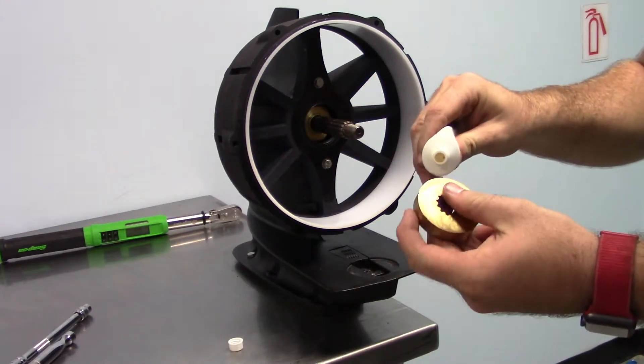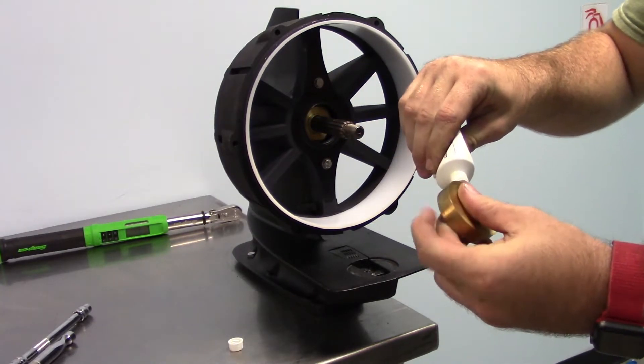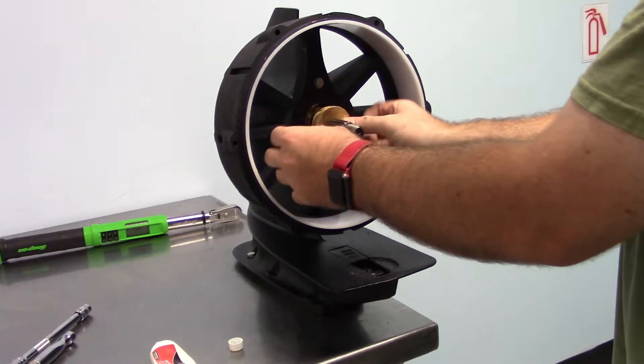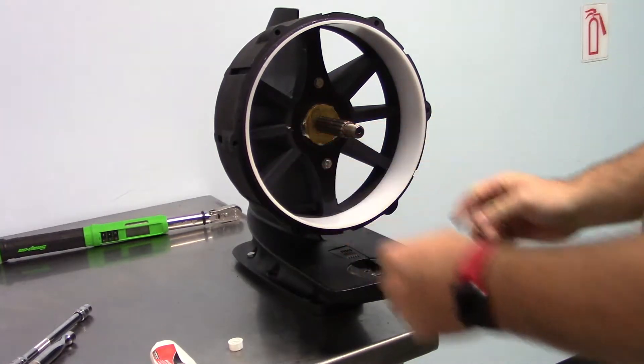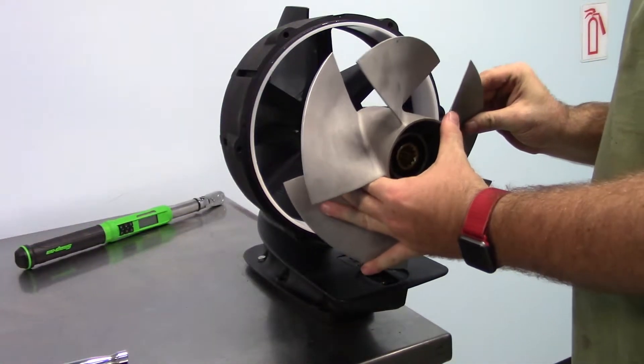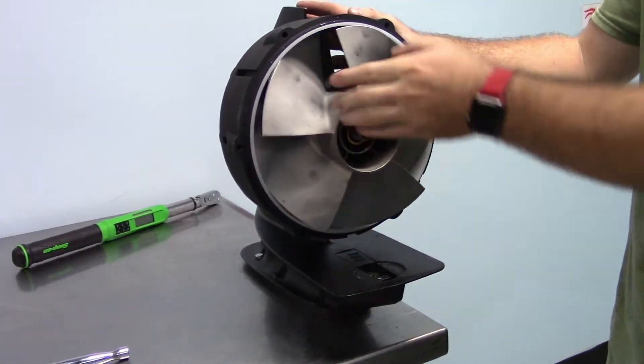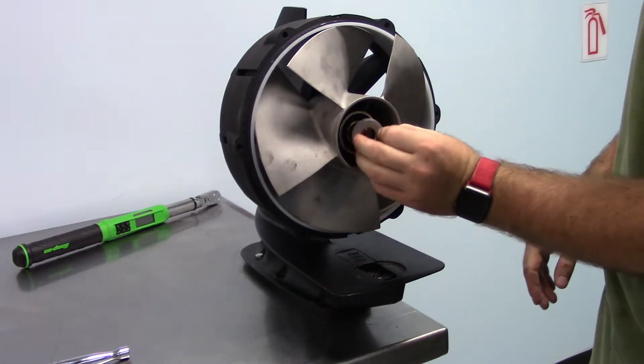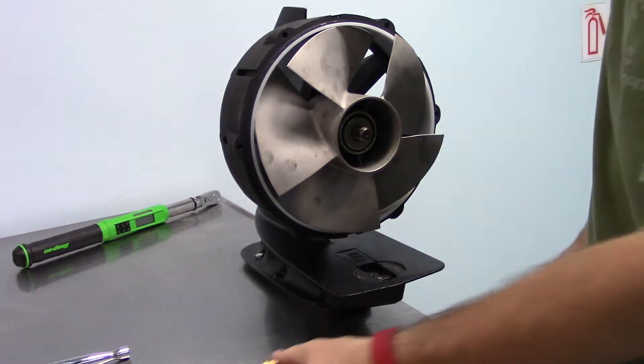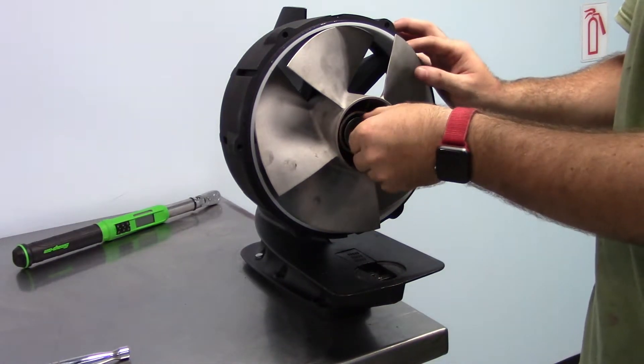Apply grease to the brass impeller spacer and push it into place inside the stator. Install the impeller, ensuring that it spins freely, followed by the washer and castle nut. Be sure to install the cotter pin into the castle nut.